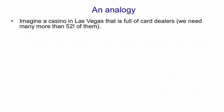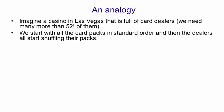Here's an analogy just to help with the concept. Imagine a very large casino in Las Vegas with lots of card dealers. In fact, we have many more than 52 factorial card dealers. We start with all the card packs in the standard order that they come from the manufacturer.